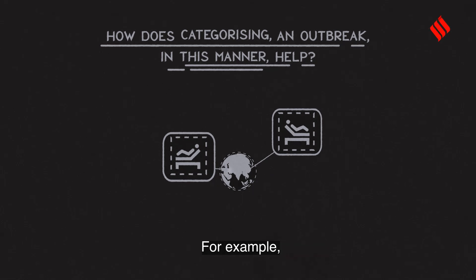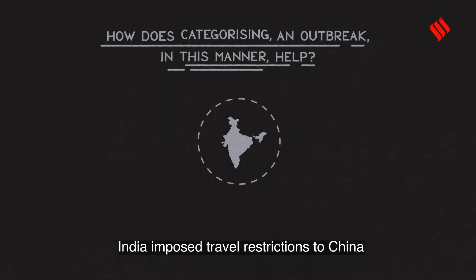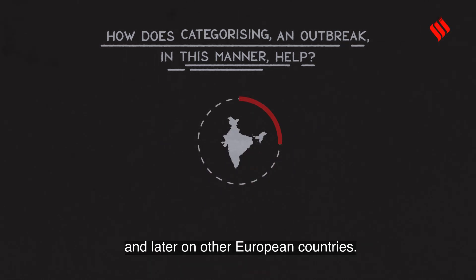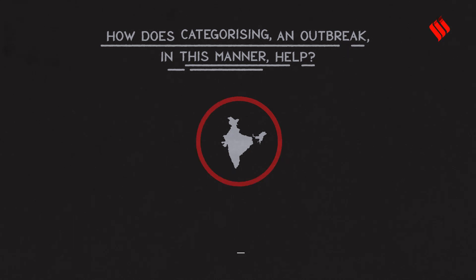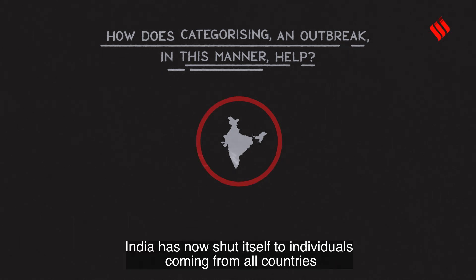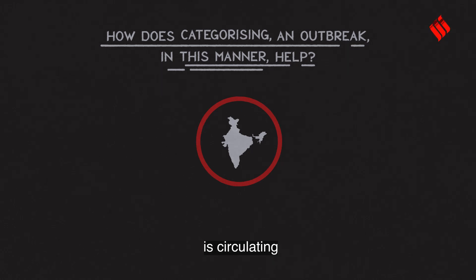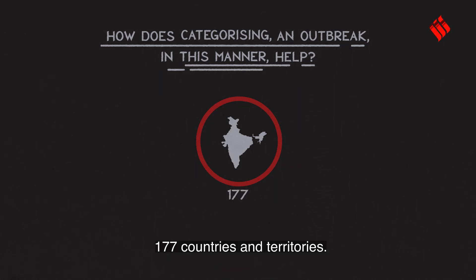For example, during stage 1, India imposed travel restrictions to China and later to other European countries. India has now shut itself to individuals coming from all countries, as the virus is circulating in at least 177 countries and territories.